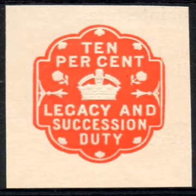Conversely, Pigou argues, if an industry produces a marginal social benefit, the individuals receiving the benefit have no incentive to pay for that service. Pigou refers to these situations as incidental uncharged disservices and incidental uncharged services, respectively. Pigou provides numerous illustrations of incidental uncharged disservices. For example, if a contractor builds a factory in the middle of a crowded neighborhood, the factory causes higher congestion, loss of light, and a loss of health for the neighbors.